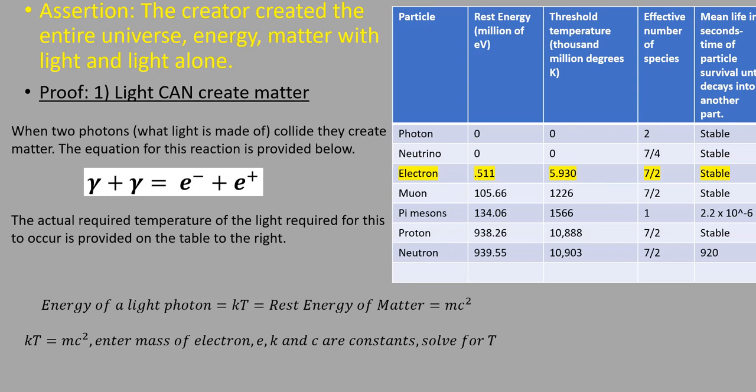The required temperature of light to produce a proton is 10,888 thousand million degrees. You can actually solve for this with these equations right here. You set the energy of a light photon, kT, equal to the rest energy of matter, which is the mass of the matter times the speed of light squared, and solve for temperature T. So if you plug in the mass of an electron right here and solve for temperature, you get this number here, 5.9 thousand million degrees.